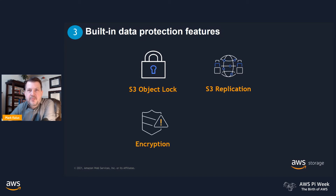The third feature here is encryption. Both S3 and Glacier API endpoints support encryption in transit via Transport Layer Security (TLS). For encryption at rest, Glacier encrypts all data by default. In S3, customers have the ability to configure server-side encryption either with keys managed by Amazon or with customer-managed keys managed by AWS Key Management Service.